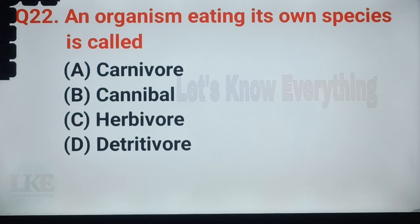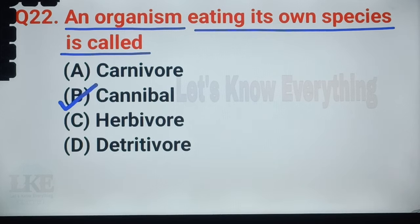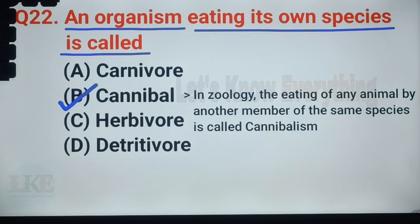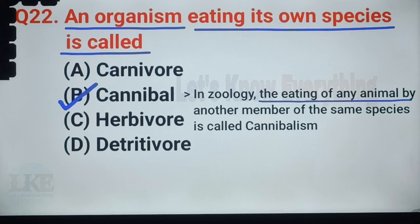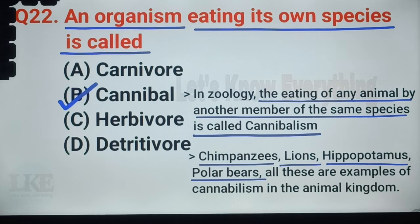Question number 41: an organism eating its own species is called a cannibal. In zoology, the eating of any animal by another member of the same species is called cannibalism. Chimpanzees, lions, hippopotamuses, and polar bears — all these are examples of cannibalism in the animal kingdom.